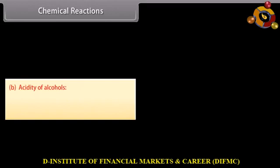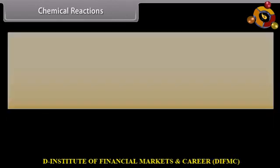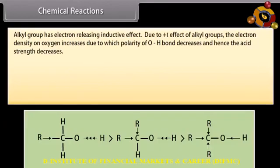The acidic character of alcohols is due to the presence of the polar nature of the O-H bond. Alkyl groups have an electron-releasing inductive effect. Due to the +I effect of alkyl groups, the electron density on oxygen increases, due to which the polarity of the O-H bond decreases, and hence the acid strength decreases.